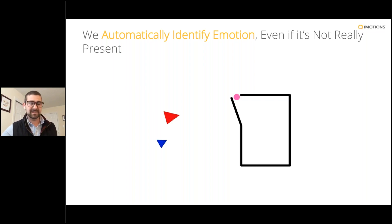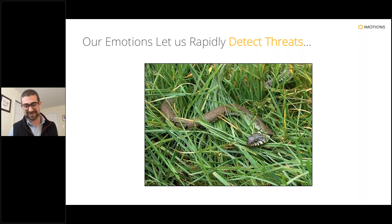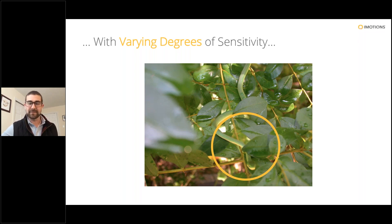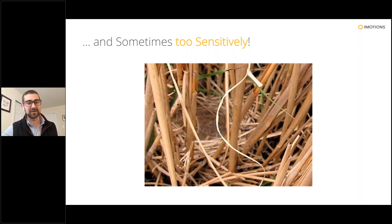This is an evolutionary response. Our emotions can help us rapidly detect threats. If we're out hiking and suddenly a snake pops out of nowhere, we have a very quick emotional response as part of our self-preservation instinct. Those more fearful of snakes will spot the snake very quickly, whereas others may have just noticed the leaves. Sometimes we do this a bit too sensitively — you might look at a piece of straw and think that's also a snake.